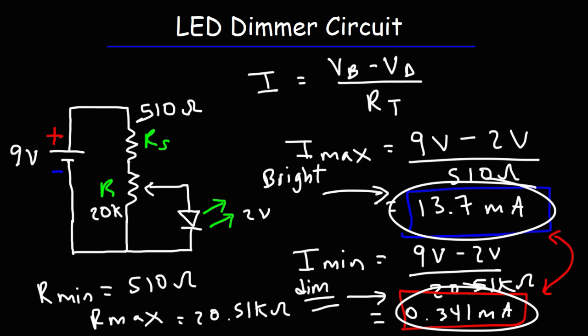So that's basically it for this video. Now you know how to create an LED dimmer circuit using a 9-volt battery, a potentiometer, a current limiting resistor, and a 2-volt green LED. Thanks for watching.